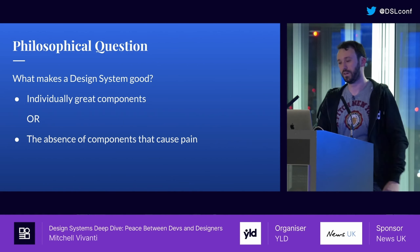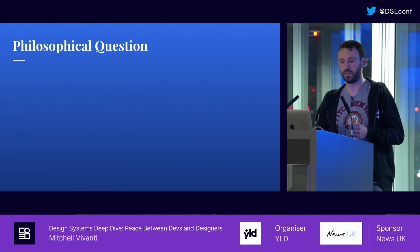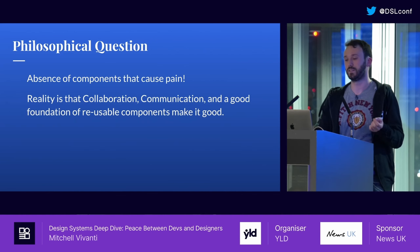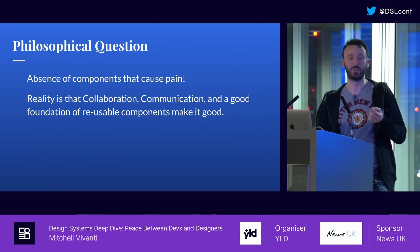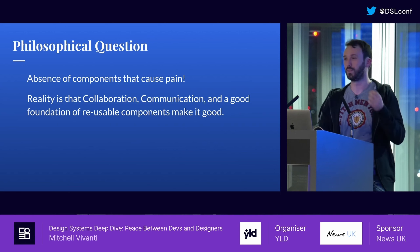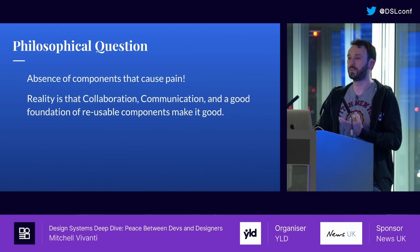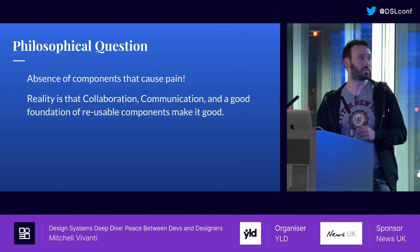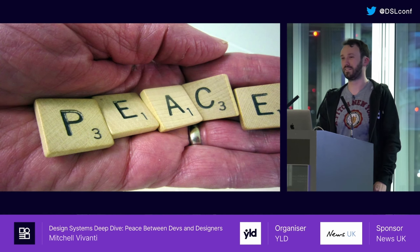So the final point: what makes a design system good? Is it individually great components or the absence of components that cause pain? My opinion — and I think hopefully you'll agree — it's the absence of components that cause pain. The number of times you use a component and it causes pain is very high, so the more you reduce that, the better the experience for everybody. What you really want is good collaboration, good communication, and a good foundation of reusable components. That's what makes a good design system — and hopefully with that, we can achieve peace. Thank you very much.